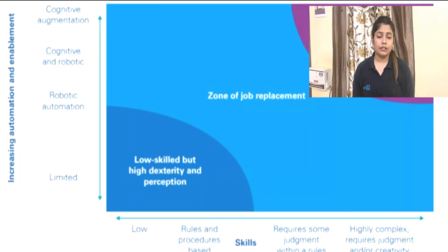Coming to the next important question: what are the job trends and how much will you get paid? According to the KPMG report 'Rise of the Humans,' currently humans perform 71% of total tasks and 29% are executed by robots. However, the forecast until 2025 is that 58% of tasks will be handled by humans and 42% by machines, meaning RPA jobs will increase exponentially in the coming years.